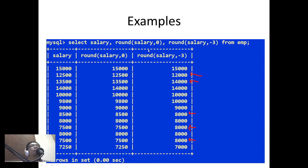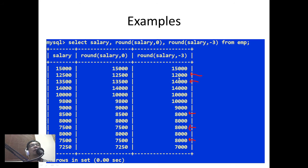Here is another example. SELECT salary, ROUND(salary, 0), and ROUND(salary, -3). When you specify 0, that rounds to the nearest ones — but since our values have no decimal places, it stays the same. Negative 3 means rounding to the nearest thousands, so the value is rounded off to the nearest thousand.